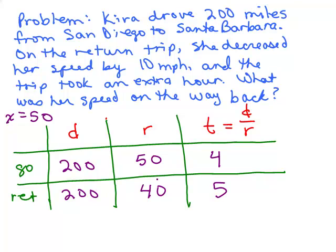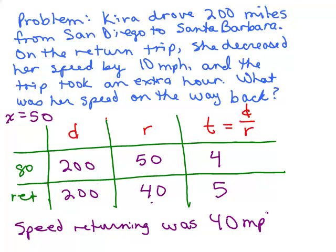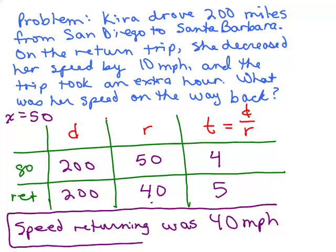So what happened? When you decreased the speed by 10 miles an hour, did it take an hour longer? Well, look at the time. Yes, it did take an hour longer. Now all we have to do is answer the question, what was your speed on the way back? Speed returning was 40 miles per hour. Make sure you answer the question they ask you at the end.